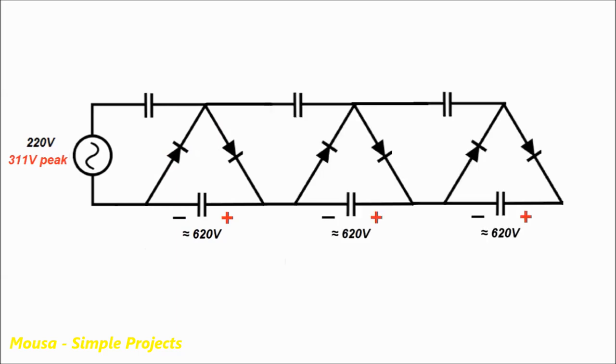By adding more stages we will get higher voltage in the output. I'm using three stages of this voltage doubler, so the output voltage will be around 1860 volts.